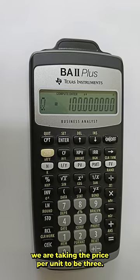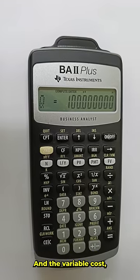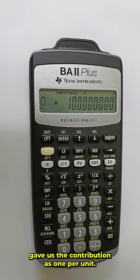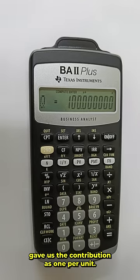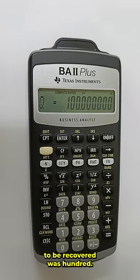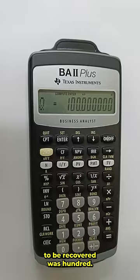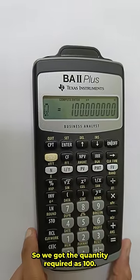As we saw, we had taken the price per unit to be 3 and the variable cost per unit to be 2, which gave us the contribution as 1 per unit, and the fixed cost required to be recovered was 100. So we got the quantity required as 100.